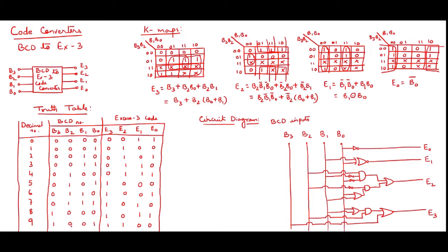So we have nicely mentioned 0, 0, 0, 0 and then 1, 0, 0, 1. Now I want that in XS3, because I am encoding from BCD to XS3 code converting.